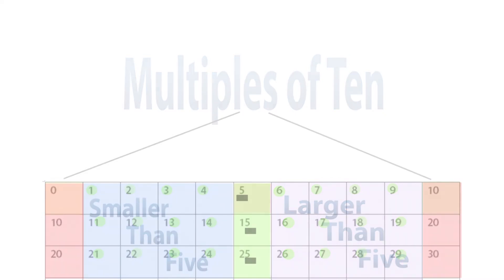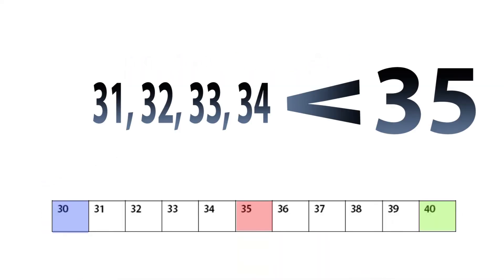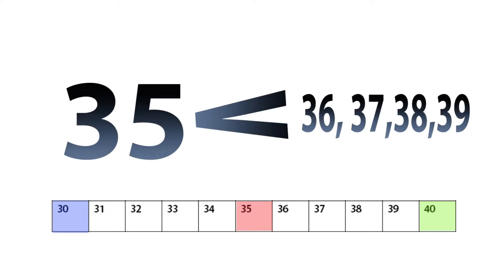Between 30 and 40, numbers 31, 32, 33, and 34 are less than 35. And between 30 and 40, numbers 36, 37, 38, and 39 are larger or greater than 35. Let's view this overall pattern on a graphic.